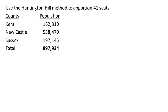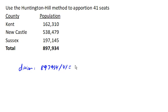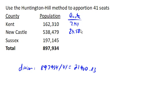Now we're going to use the Huntington-Hill Method to apportion 41 seats in Delaware. The Huntington-Hill Method is the method currently used to allocate the U.S. House of Representatives. It was introduced in the 1940s, and it starts out the same way as our previous methods. We're going to find our divisor by dividing our total population by the number of seats, coming up with a divisor of 21,983. Then we find our quotas by dividing each population by the divisor.